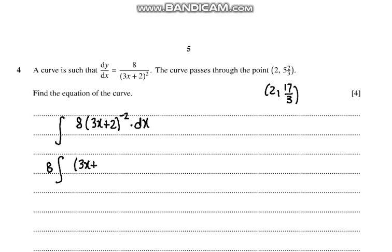So this would become 8 times integral of (3x + 2)^(-2) dx. And the result, we need integral of the function outside, so 8 divided by 3 inside, (3x + 2)^(-2) dx.